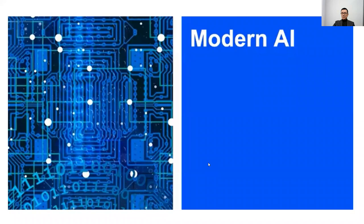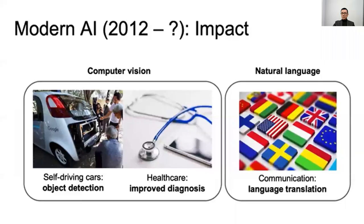Some more information on modern Artificial Intelligence. AI can be categorized into computer vision and natural language processing. Computer vision applications include, for example, self-driving cars, object detection, and healthcare with improved diagnosis. AI can now help doctors make correct diagnoses — an example being cancer detection.